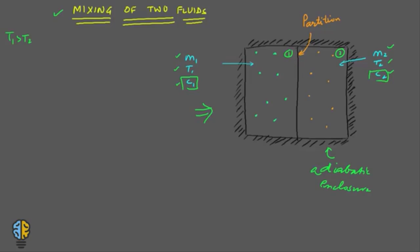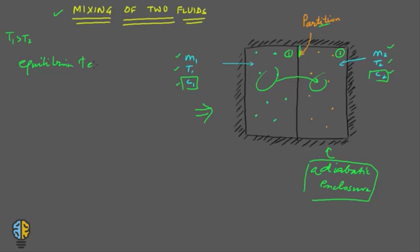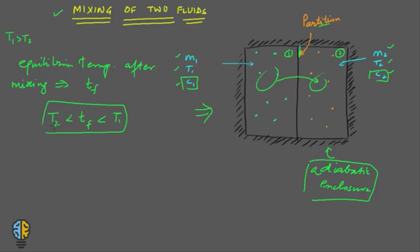Both fluids are kept separate by a partition inside the adiabatic enclosure. When you remove this partition, they start mixing with each other. This mixing results in an equilibrium state defined by the equilibrium temperature Tf, which lies within the range between t2 and t1.